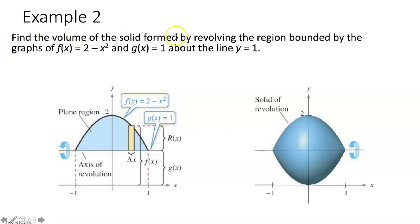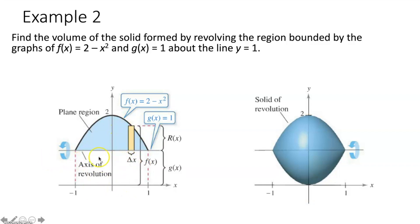Example two: find the volume of the solid formed by revolving the region bounded by f(x) = 2 − x² and g(x) = 1 about the line y = 1. We're revolving this region about an axis of revolution, creating a three-dimensional solid with circular cross sections because our region is connected to our axis of revolution. So we'll use the disk method.